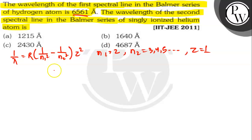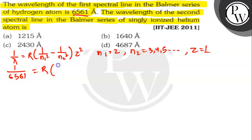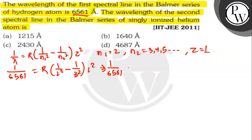Putting all these values in the equation: 1 by 6561 is equal to R into 1 by 2 squared minus 1 by 3 squared, into 1 squared. So this gives us 1 by 6561 is equal to R into 5 by 36.